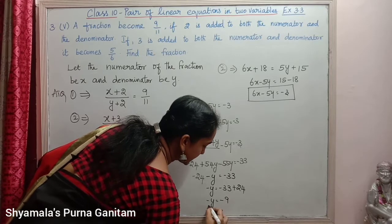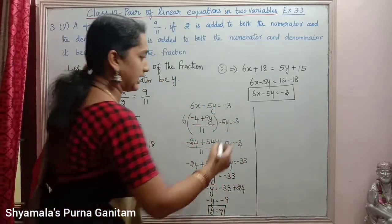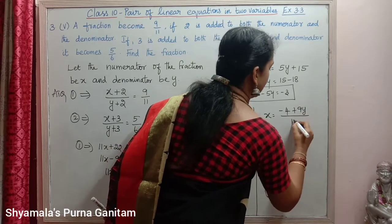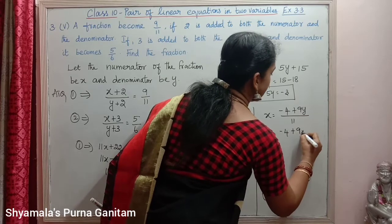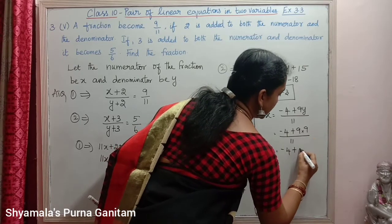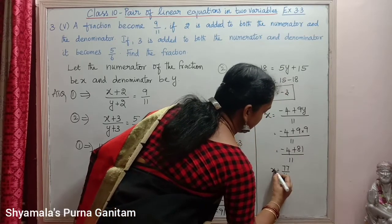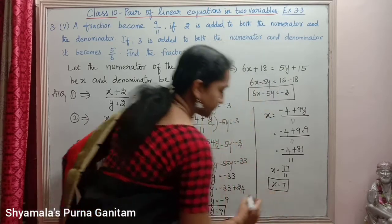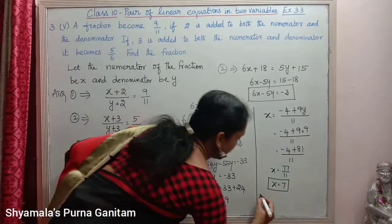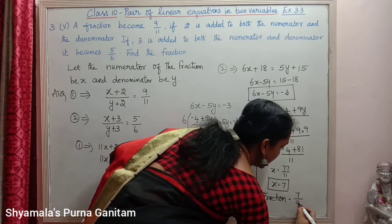So y equals 9. Now substituting this y value into x equals (minus 4 plus 9y) divided by 11: x equals (minus 4 plus 9 times 9) divided by 11, which equals (minus 4 plus 81) divided by 11, equals 77 by 11. So x equals 7. I got x equals 7 and y equals 9. We are asked to find the fraction, which is x by y. Therefore the fraction is 7 by 9. This is the answer.